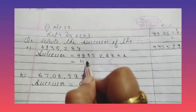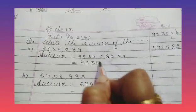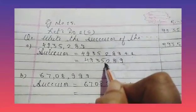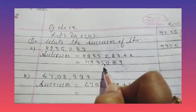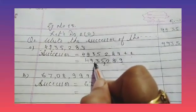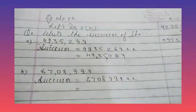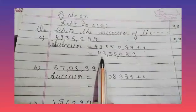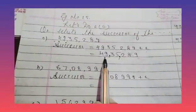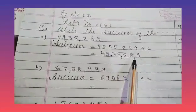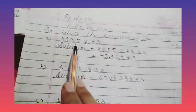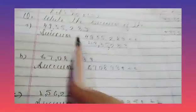We have part A: 49,35,289 — comma placed three digits from the right-hand side, then two digits. The successor of 49,35,289 is 49,35,290.